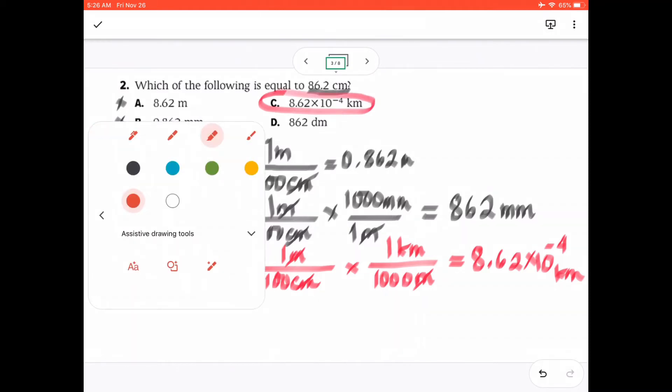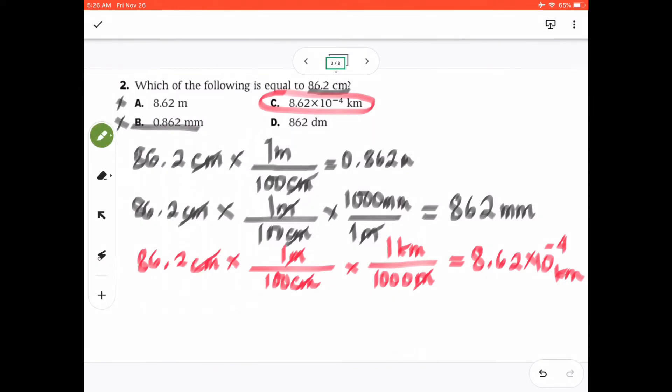but for discussion sake, I also want to calculate the last one so that you would know how to calculate from centimeter to decimeter. 86.2 cm times 100 cm is equal to 1 meter, and then again, the conversion factor 1 meter is equal to 10 decimeters. We can now cancel meter, meter, and centimeter, centimeter. The answer here is equal to 8.62 decimeters. So as you can see, they're not equal. The only one which are equal to the conversion is the third one, letter C. Therefore, that's the answer.